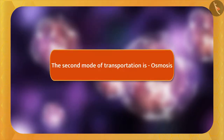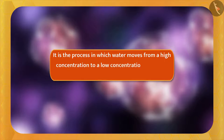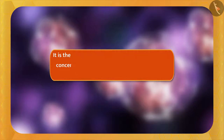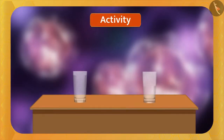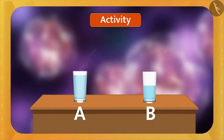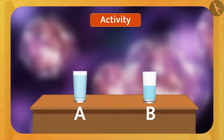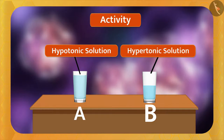The second mode of transportation is osmosis — the process in which water moves from higher concentration to lower concentration through a semi-permeable membrane. To understand this, let's do an activity. Take two glasses, A and B. Add water to each, then mix equal amounts of sugar or salt. Glass A has a higher concentration of water than glass B, so glass A is called a hypotonic solution, while glass B, with lower water concentration, is called a hypertonic solution.